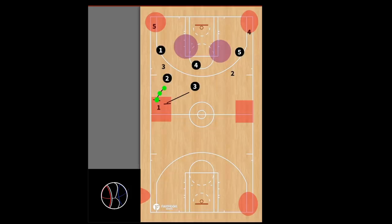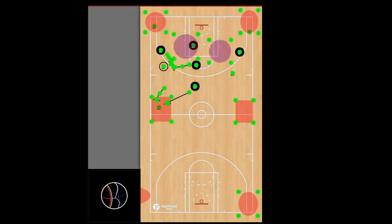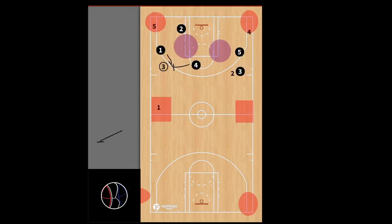If number one passes the ball to three, you have number one and number four to apply pressure toward the sideline. Then two has to recover, four has to recover, and three has to recover. When one passes to three, four and one come to play defense, three recovered, two recovered, and five is ready to play defense — you still have pressure keeping the player toward the sideline.